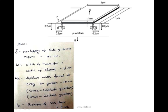At the drain side as well, the drain is N+ and the substrate is P-type, so again a PN junction is formed at the drain side. PN junctions are formed at both source and drain sides. Drain and source are heavily doped (N+), whereas the substrate is lightly doped P-type. Since depletion width penetrates more into the lightly doped side, the total depletion width can be assumed to be in the P-type substrate only.